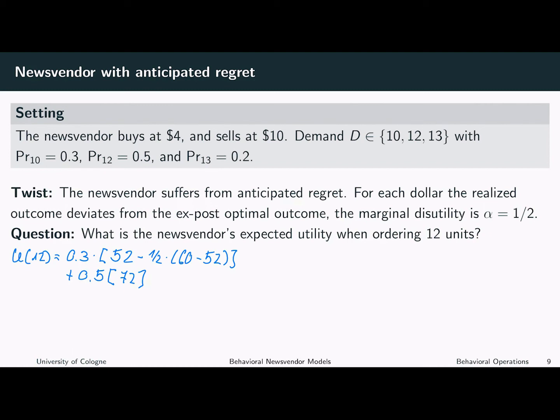And finally, we have to consider the case in which the newsvendor faces a demand of 13 but only ordered 12 units, which occurs with probability 0.2. In this case, the newsvendor makes a profit of 72. But the ex-post optimal profit would have been ordering 13 units and selling them at a price of 10 each, meaning a revenue of 130 minus the costs of 13 times 4, which results in a profit of 78. Instead, the newsvendor only made a profit of 72, and so the newsvendor suffers from this difference.